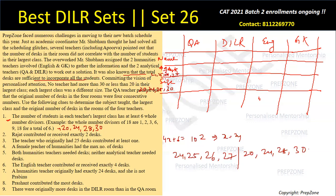From hint four, the female humanities teacher had the maximum number of desks, which is 27. So one humanities teacher has 27 desks.